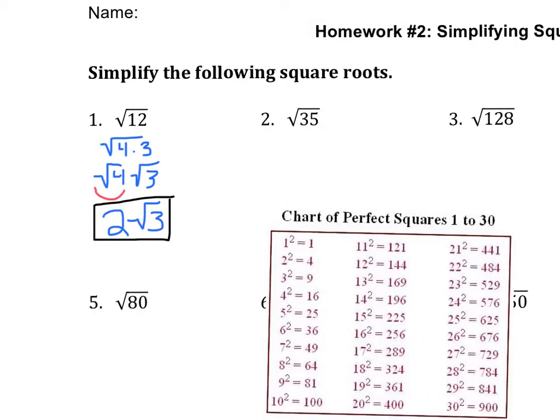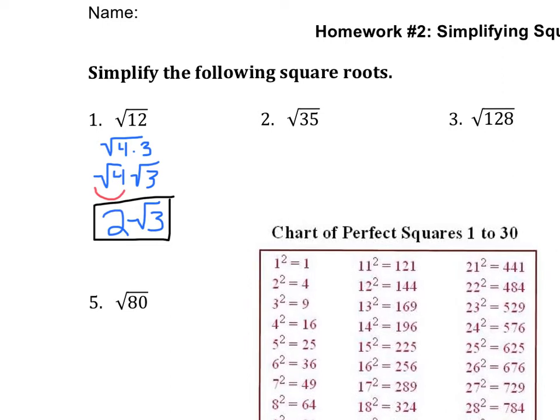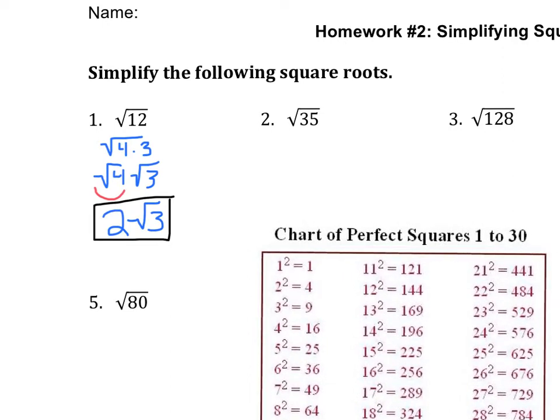Now let's look at number 2. Number 2 says the square root of 35. Well, the factors of 35 are 7 and 5, and neither 7 nor 5 are over here on my list. So it's not that 35 is prime, because I've heard some of you say that. It's that 35 does not have any factors, or no numbers multiply together to be 35, that are perfect squares. So this is already simplified, and that's all I write.